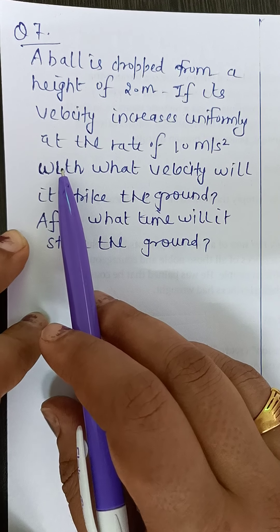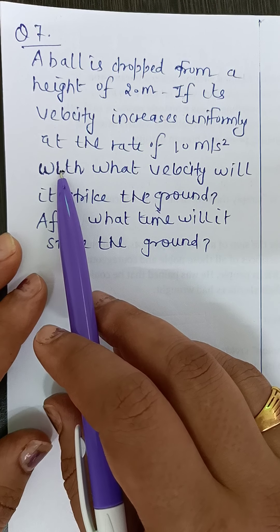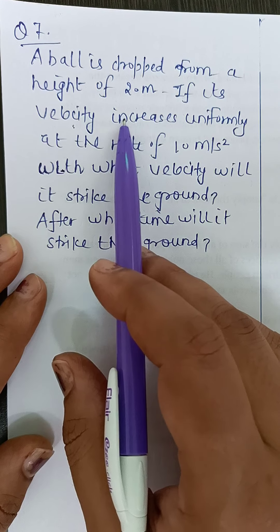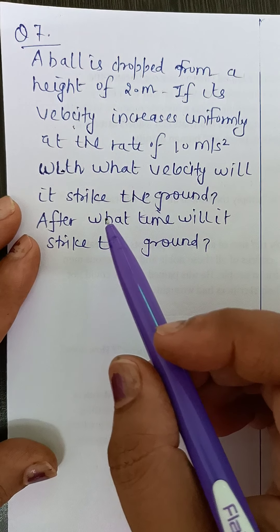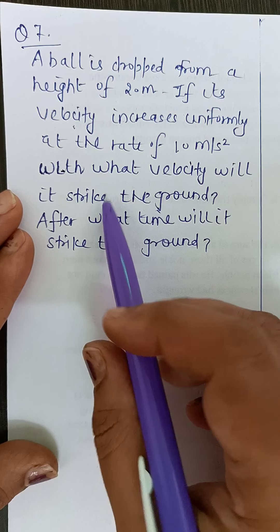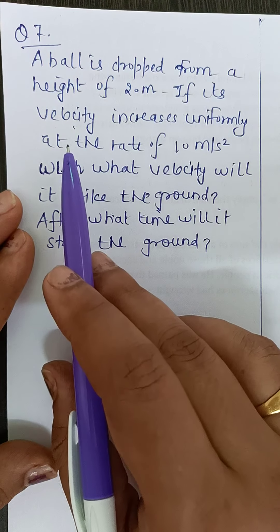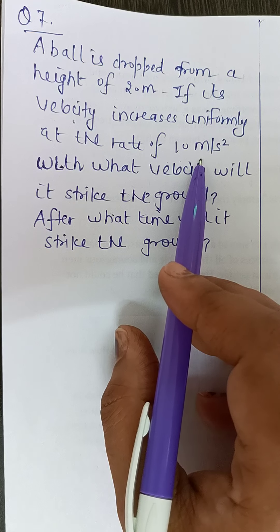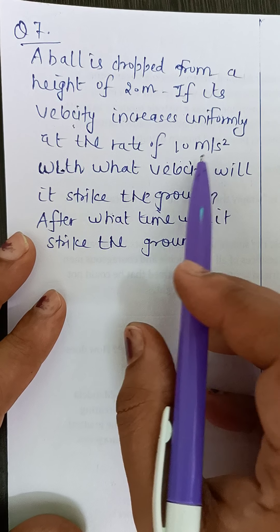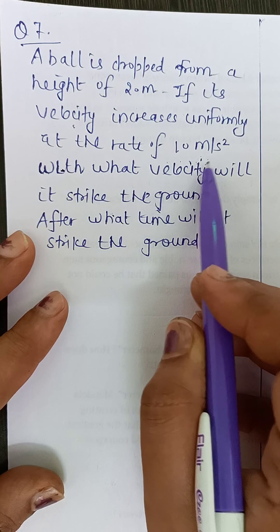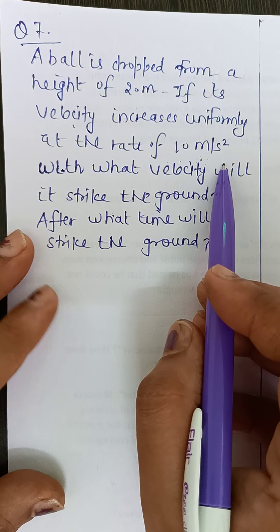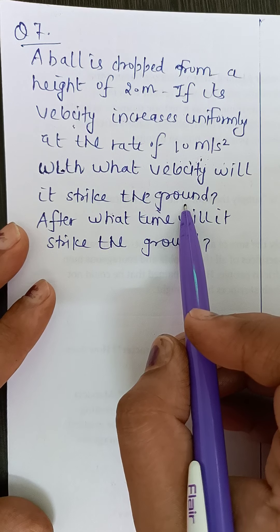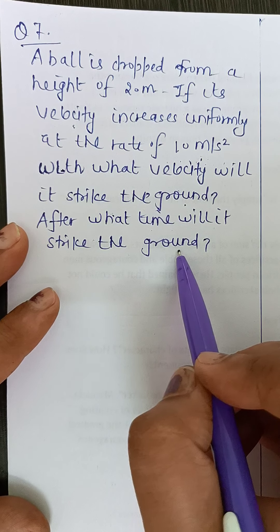Now I am taking question number 7, as it is based upon equation of motions. This is quite important type. A ball is dropped from a height of 20 meter. First of all, we have to imagine this case also, that body is dropped from a height of 20 meter. If its velocity increases at the rate of 10 meter per second square, its velocity is increasing at the rate of 10 meter per second square. See, meter per second square, identify the quantity which has unit meter per second square: acceleration. With what velocity will it strike the ground? And after what time will it strike the ground?